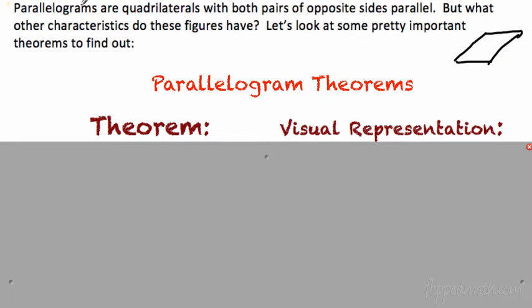A parallelogram is a quadrilateral that has both pairs of opposite sides parallel. So that means that in this figure, the top and the bottom are parallel to each other and the left and the right are parallel to each other. But what else happens when the sides are parallel like that in a quadrilateral?